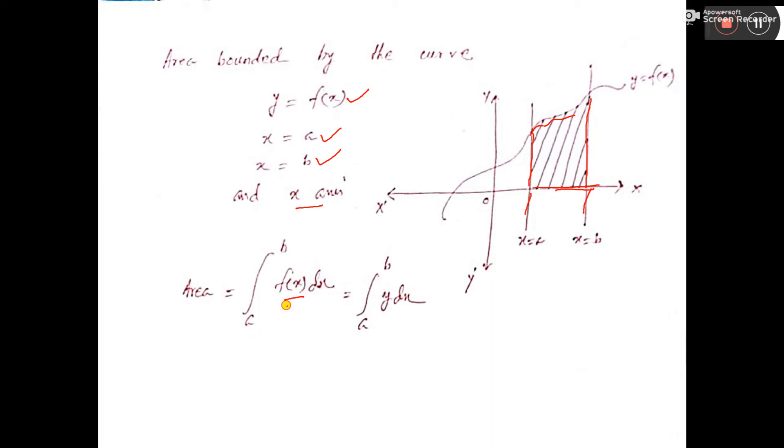The formula will be a to b f(x) dx, or f(x) means y, y dx, y a to b. Here you see x equal to a, y equal to b, that is why a to b and y dx. Y equal to the function, so y dx. So in place of y if you put the function, then area will be a to b f(x) dx.